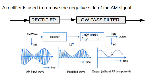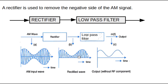This is the method of AM demodulation. The AM demodulation circuit has two sections: one is the rectifier and the second is the low pass filter. The rectifier removes the negative side of the AM signal to eliminate the message signal at the negative side. The remaining signal is applied to the low pass filter, which removes the high-frequency carrier, and finally we get our message signal.